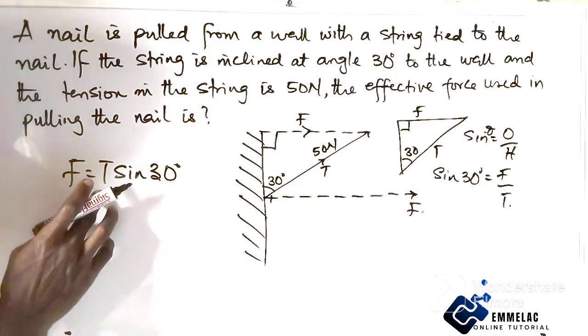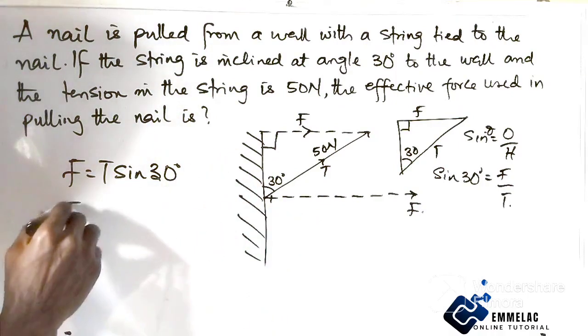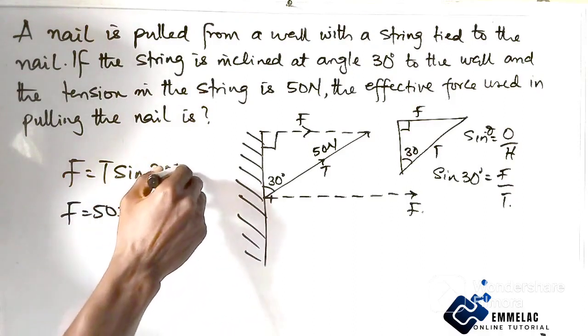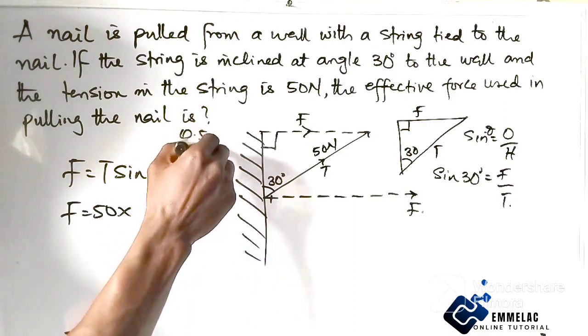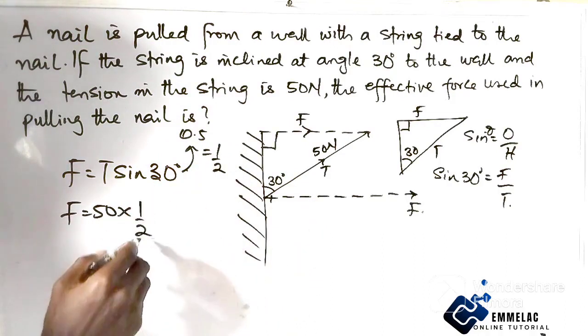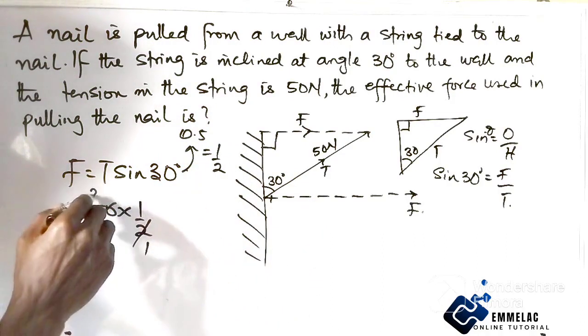0.5, in fraction 1 over 2. So 2 goes into 50, giving us 25. Our effective force is 25 Newton. Simple. This is the final solution to the question.